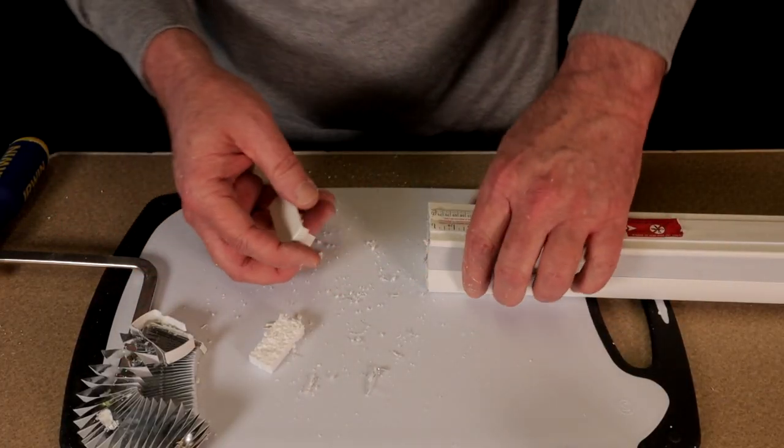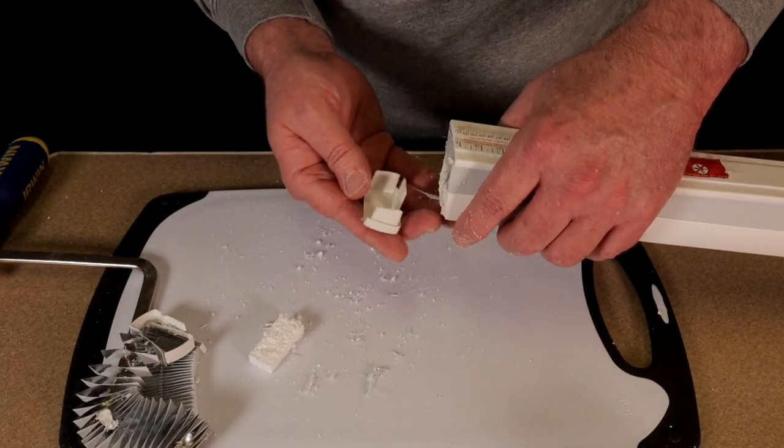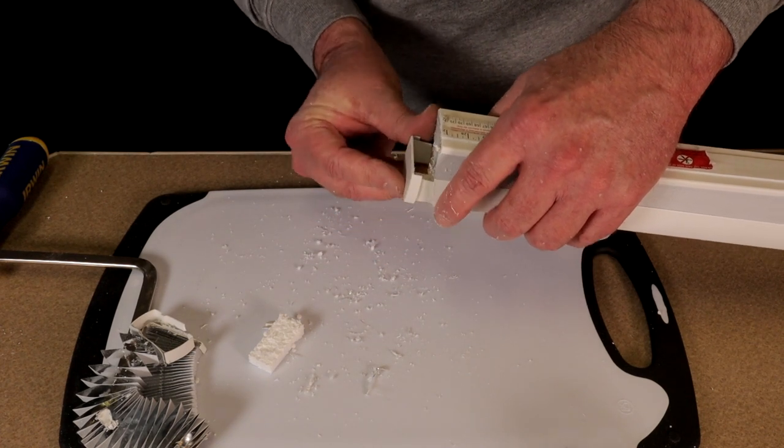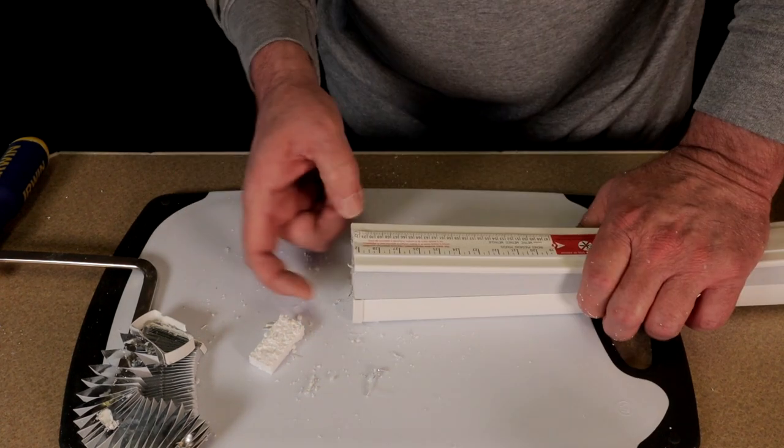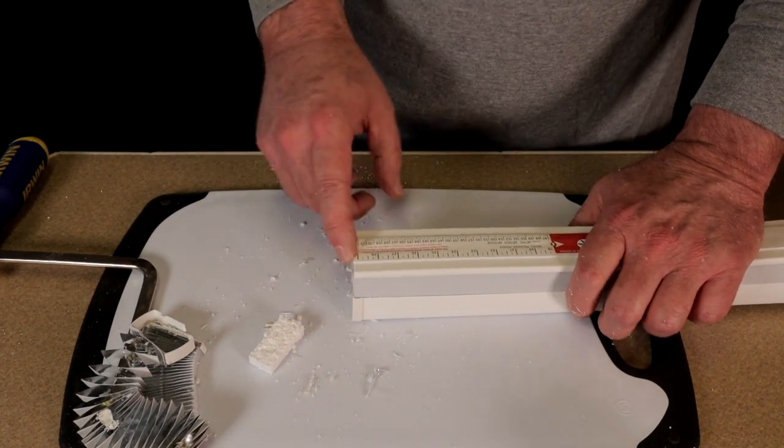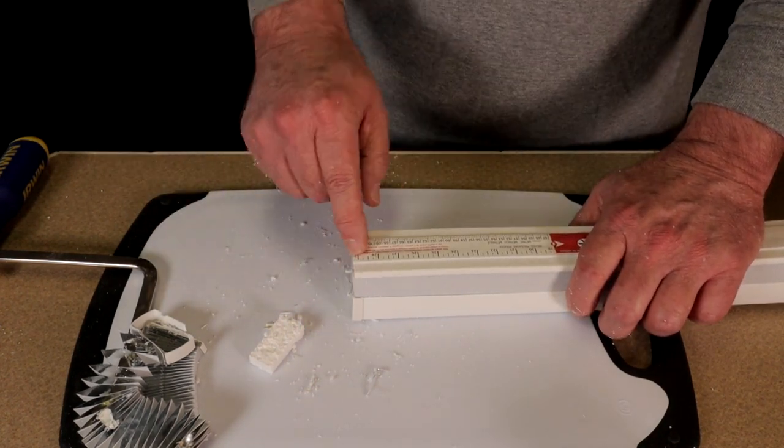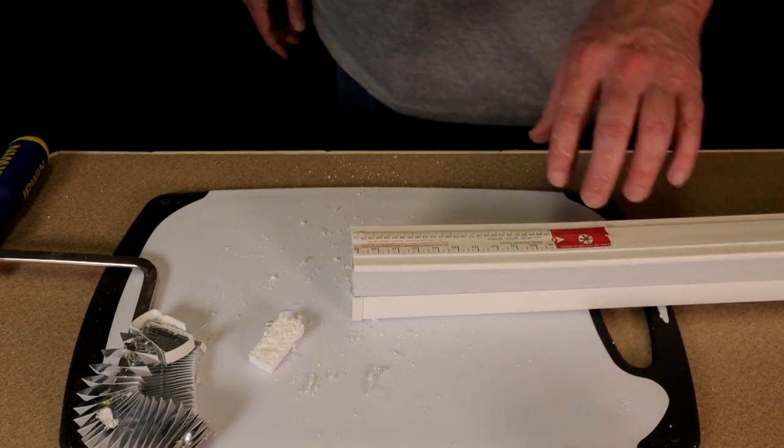We remove this end cap before we started on this. Now we just take that end cap and we're going to slide it right back in there. Now we have this side cut. We flip it around. We cut at the same mark on the other end exactly the same way.